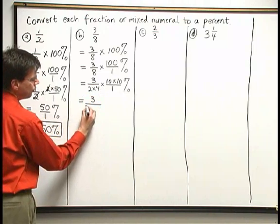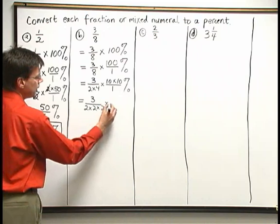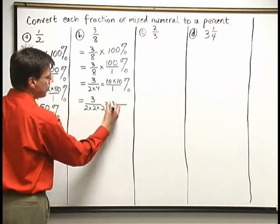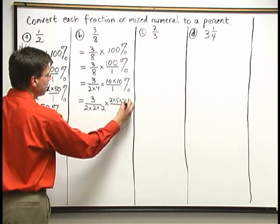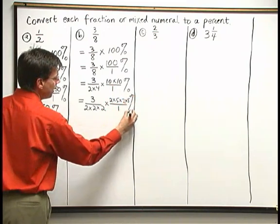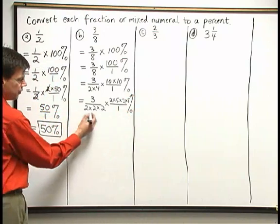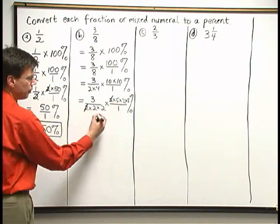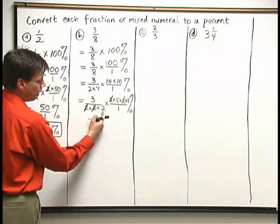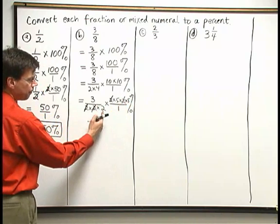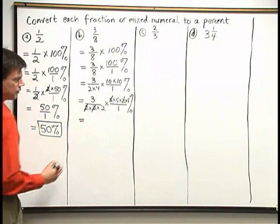3 over 2 times 4 is 2 times 2 times 10 is 2 times 5 times 2 times 5 over 1. And I still have my percent sign on the end. Now I do see that I can cancel a 2 below with a 2 above. Another 2 below with a 2 above. All I have left is one more 2 below.